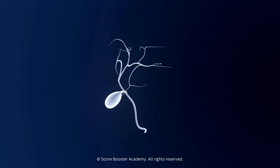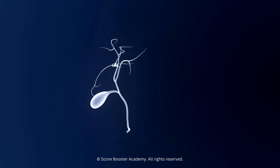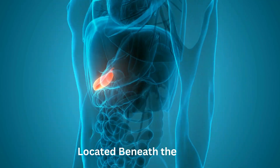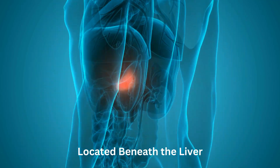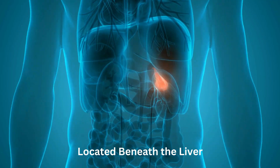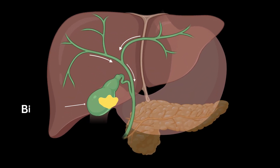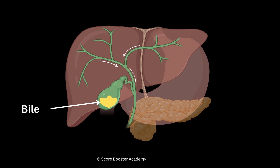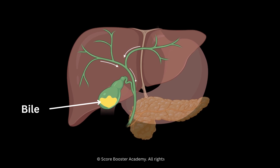The gallbladder is a pear-shaped, hollow organ located beneath the liver. It serves as a storage reservoir for bile, a fluid produced by the liver that aids in the digestion and absorption of fats.